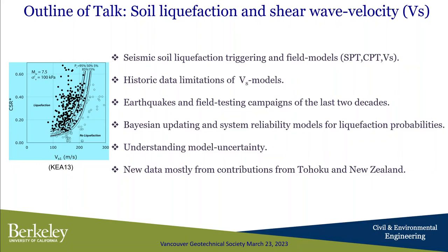I'm going to talk about a long journey that has been two decades in the making — to try to fill that hole, the mismatch between the locations of liquefaction sites and where we have shear wave velocities. We'll discuss Bayesian updating and system reliability models for liquefaction probability assessment, and new data mostly from New Zealand — the Darfield and Christchurch events — and from the Tohoku earthquake, which have greatly expanded our dataset to about 560 sites for the 2023 correlation.